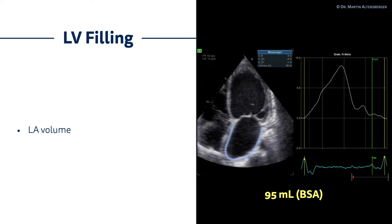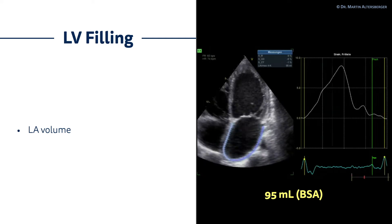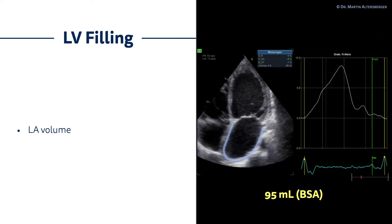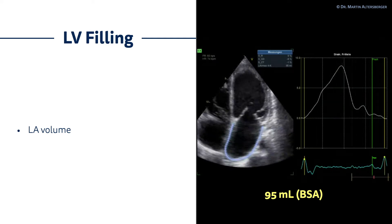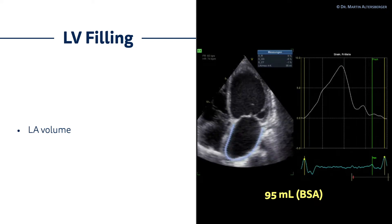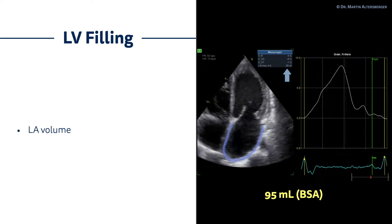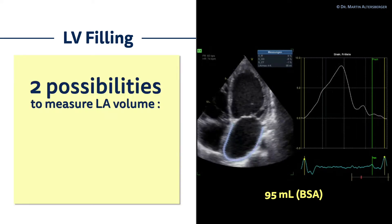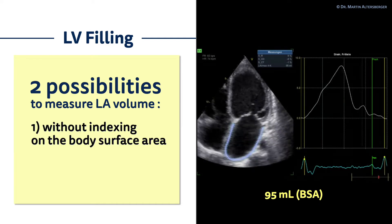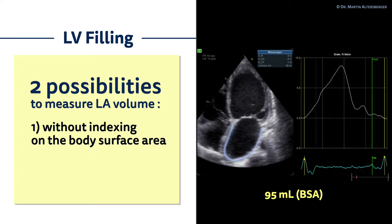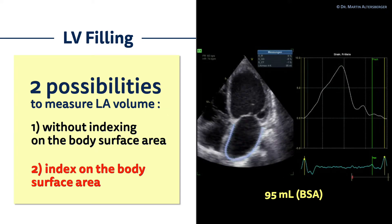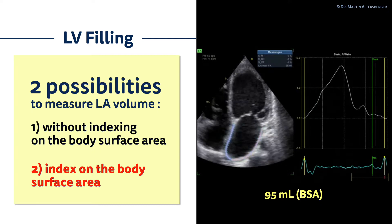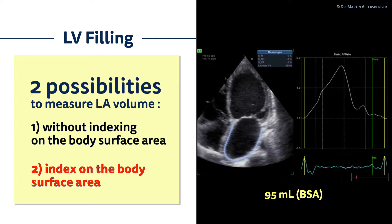The filling of the left ventricle is dependent on several factors. One of the factors is left atrial volume. On the right hand side you can see a loop where the left atrial volume is increased at 95 milliliters. You can measure it without indexing on the body surface area, or overall you should index it, in which case you will also calculate an increased volume. So left atrial volume in diastolic dysfunction and left ventricular filling is an important factor.